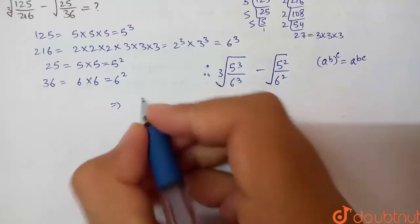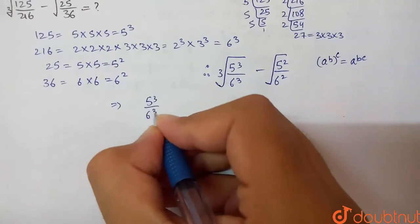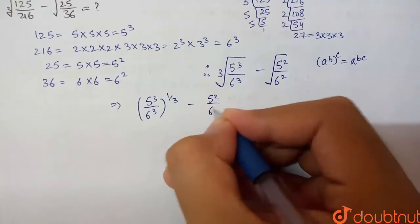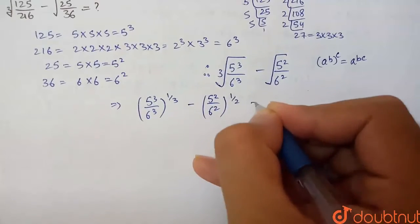So 25 is 5 into 5, that is 5 squared, and 36 is 6 squared. 5 cubed by 6 cubed, whole power 1 by 3 (cube root means power 1 by 3) minus 5 squared by 6 squared, whole power 1 by 2.